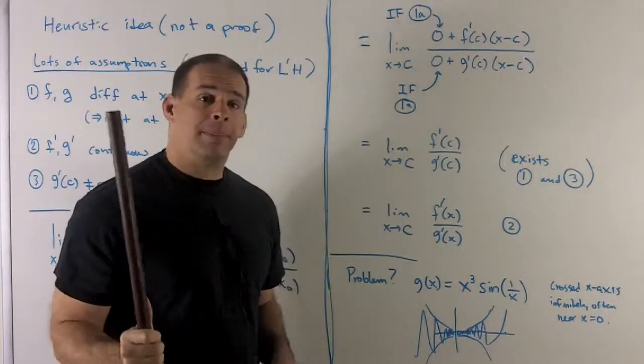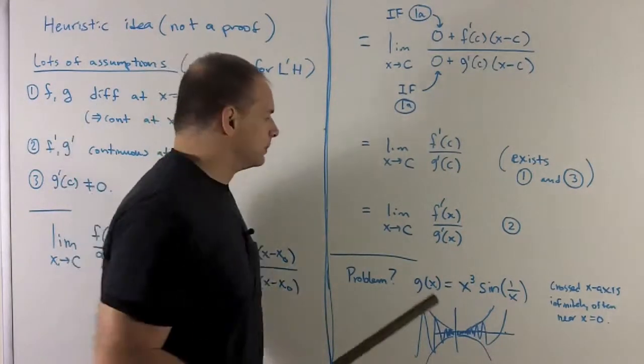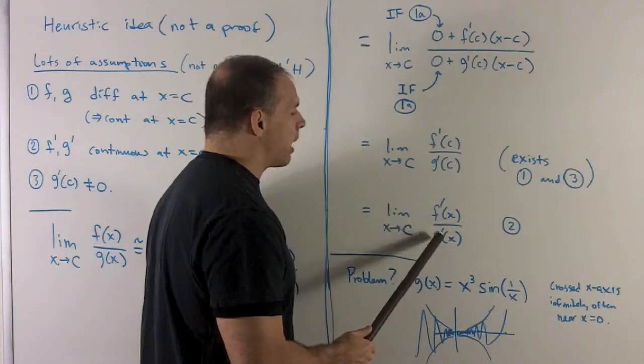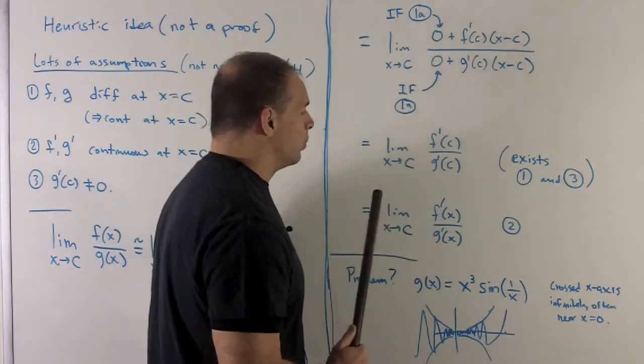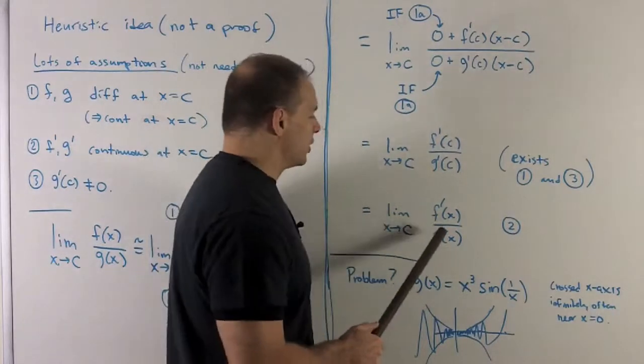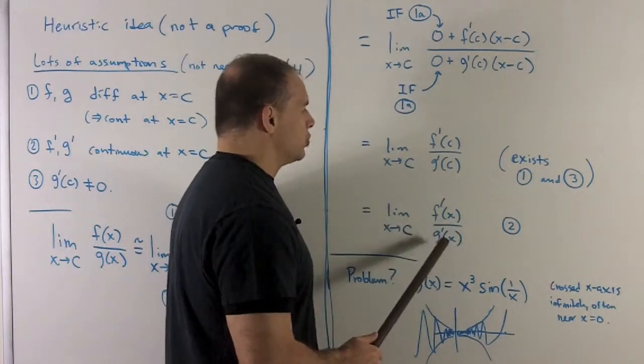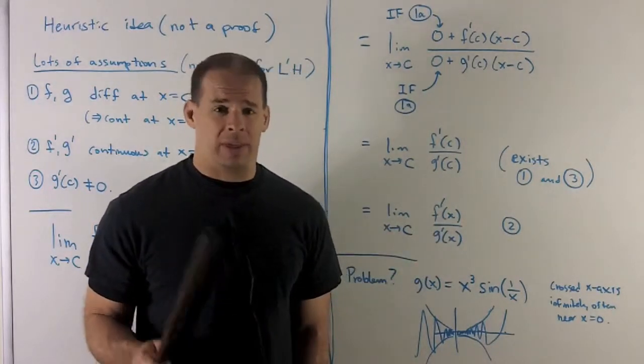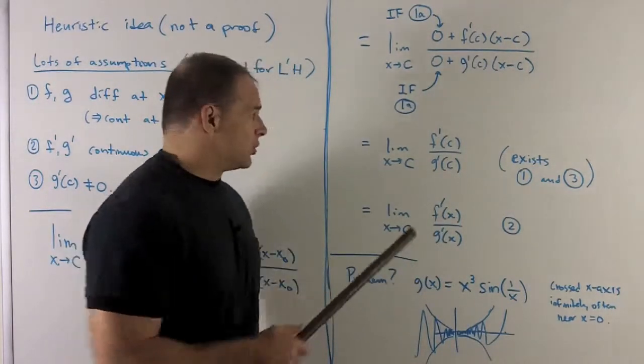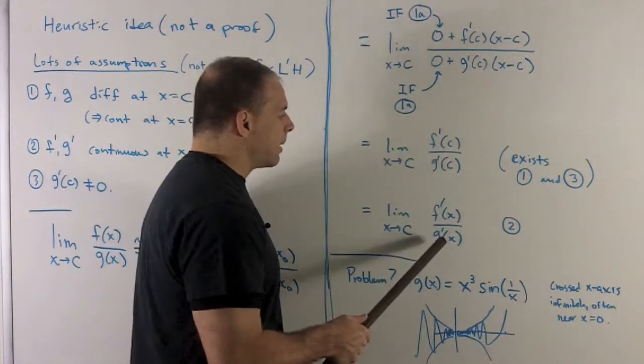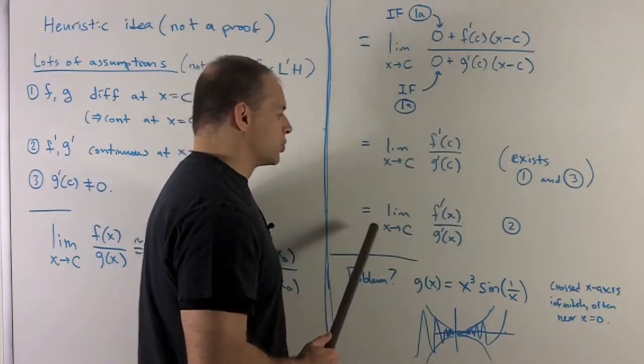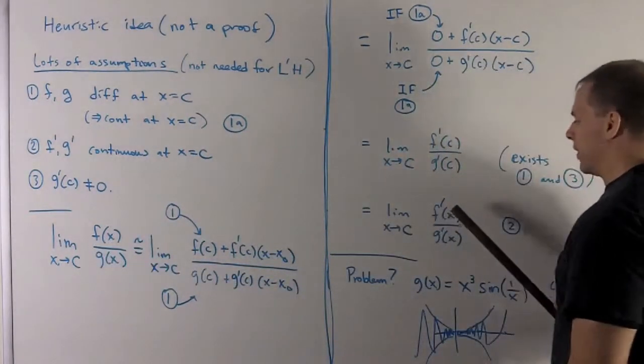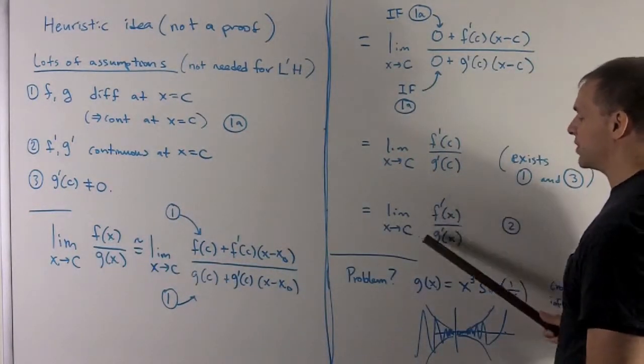For our last step, I'm going to go in the opposite direction we normally would. If I consider the limit as x goes to c of f prime over g prime, continuity, which I'm assuming in two, is going to say I can get the value for this limit just by sticking c into each function, and if something comes out, well, then that's your answer. So that lets me get from this step to this step, and then you notice this is what L'Hopital's rule says. If I want to figure out this limit, all I need to do is figure out this limit, and if it exists, I'm done.